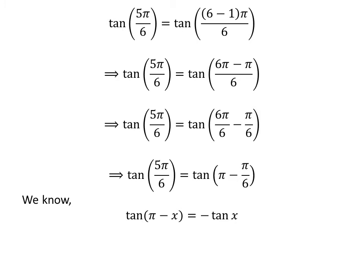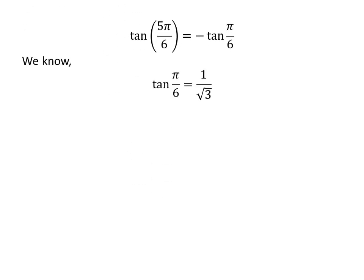We know the famous trigonometry identity: tangent of pi minus x is equal to minus tangent of x. The proof of this identity has been explained in the video appearing in the upper right corner, and the link is also given in the description. Applying this identity gives us tangent of 5 times pi upon 6 is equal to minus tangent of pi upon 6. Since tangent of pi upon 6 is equal to 1 upon square root of 3, tangent of 5 times pi upon 6 is equal to minus 1 upon square root of 3.